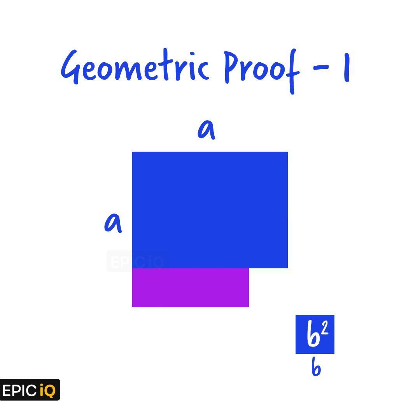Now, we split this blue region into two rectangular pieces. The larger region at the top will have width a and height a minus b.